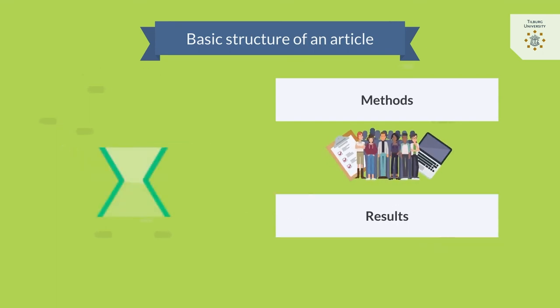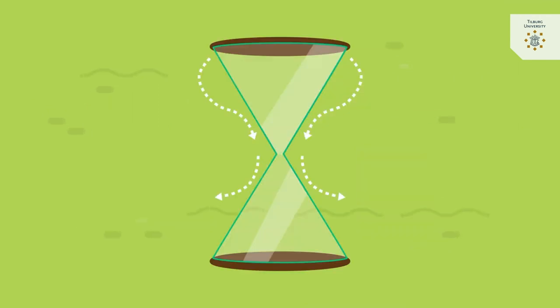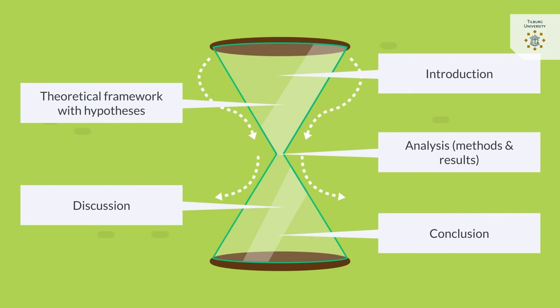The methods and results are again very specific in relation to what you did and what you found. By the time you reach the end of the paper you need to start talking about the importance of the paper. Why this paper is important becomes your discussion. As you move through the discussion you finish with the conclusion, which again is a very general statement. Here you see again how the structure of your paper follows the shapes of the hourglass.